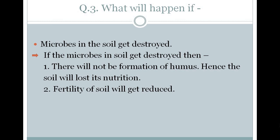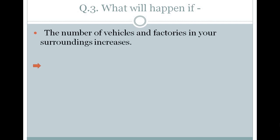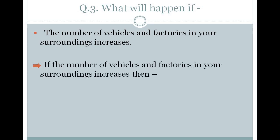The soil is fertile because of bacteria, and that is why crops grow very nicely because of the bacteria and microbes present in the soil. If these microbes are not there, the fertility of the soil will get reduced.